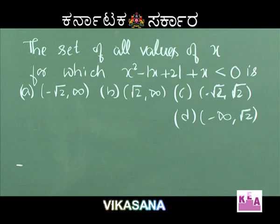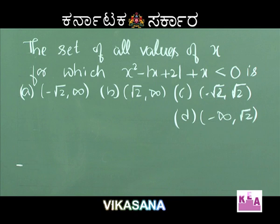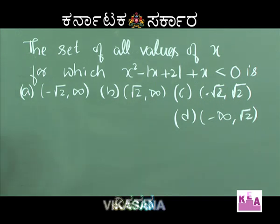Problem 1: The set of all values of X for which X² − |X + 2| + X is less than 0. Option A: minus root 2 to infinity. Option B: root 2 to infinity. Option C: minus root 2 to root 2. Option D: minus infinity to root 2.